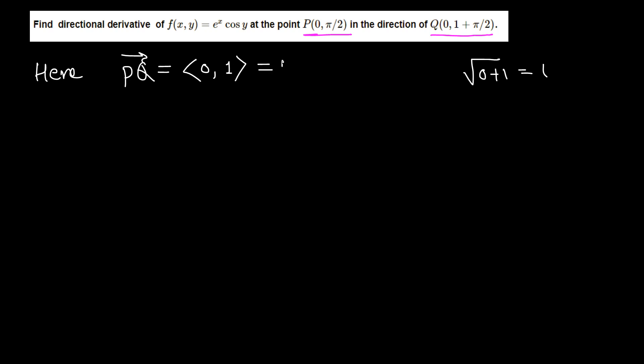Okay, so that is u, that's what we're going to use to find the directional derivative. Then directional derivative of f in the direction of u is just partial of f with respect to x, partial of f with respect to y, dot the u vector.